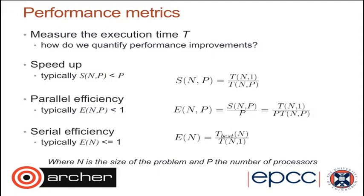Another measure closely related to speed-up is the parallel efficiency. This is just the speed-up divided by the number of processors. If you had 100% efficiency, e would equal 1, but typically what we see is that e is less than 1.